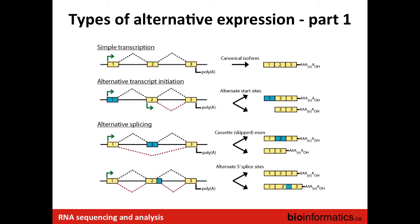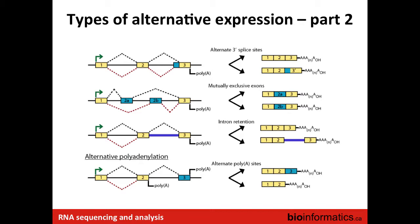Alternative splicing takes several forms. Cassette exon skipping is shown where there are two paths through the set of exons - exon two is either skipped or included. Alternative donor site usage is where the three-prime end of an exon gets longer or shorter. Similarly, alternative acceptor site usage is where the three-prime end of the intron is spliced differently, giving a potentially subtle or dramatic difference in transcript structure depending on how much of the exon is included. Mutually exclusive exons occur where two transcripts each have the same total number of exons but use alternative exons in the middle - exon 2a or exon 2b, but not both.